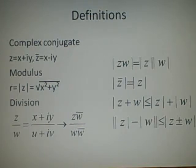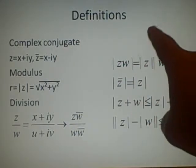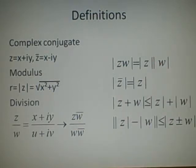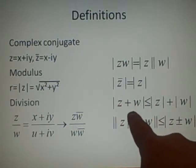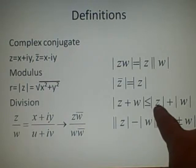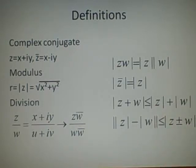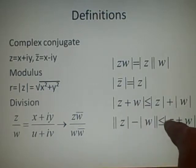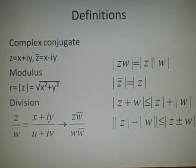These are some rules which you've been given, and they might be useful. The modulus of zw equals the modulus of z times the modulus of w. The modulus of z-conjugate equals the modulus of z. The modulus of z plus w is less than or equal to the modulus of z plus the modulus of w — this is the triangle inequality. And the modulus of the modulus of z minus the modulus of w is less than or equal to the modulus of z plus or minus w — this is the reverse triangle inequality. You probably won't need them.